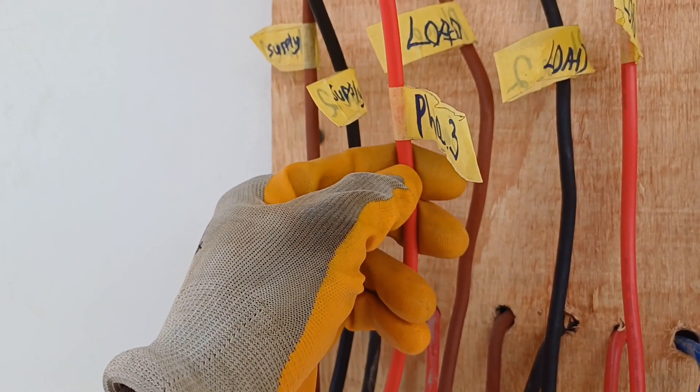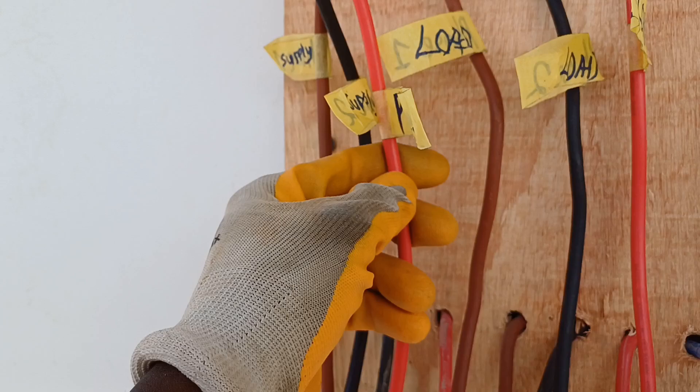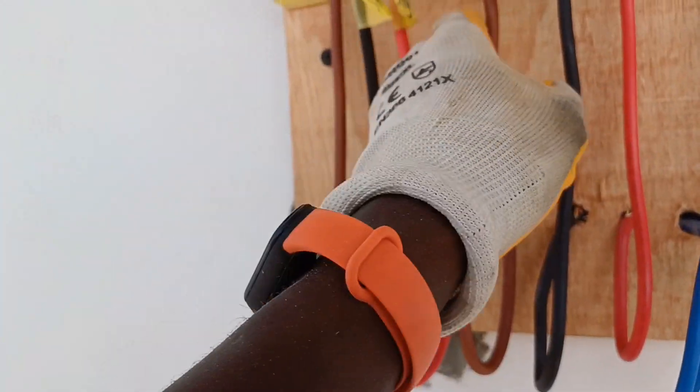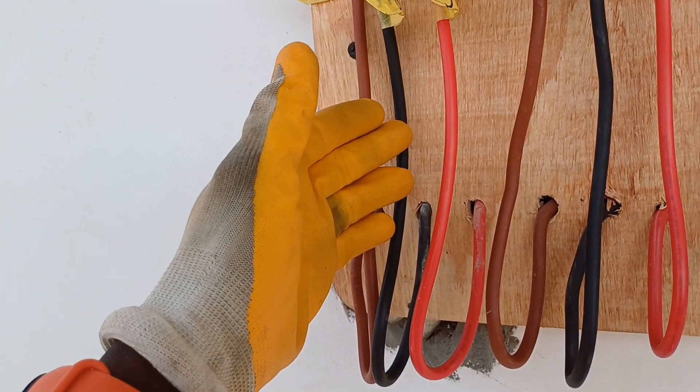It's actually because of this missing gray color that I've used red, which is why I have to label them out. Otherwise, we all know the color code here: brown for phase one, black for phase two.